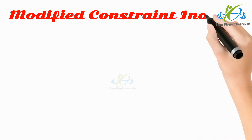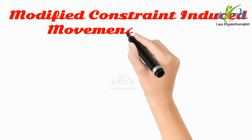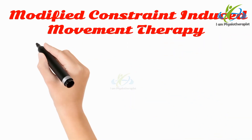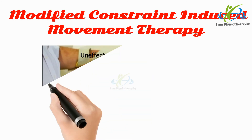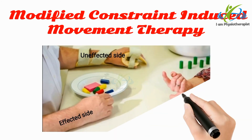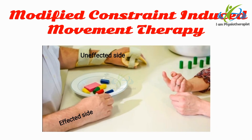Modified constraint-induced movement therapy: This therapy involves restraining the side of the body unaffected by hemiplegia. This treatment option forces the weaker side to compensate and aims to improve muscle control and mobility.